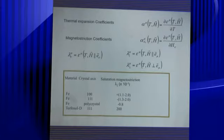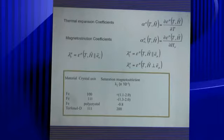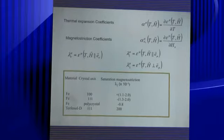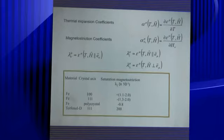Magnetostriction is analogous to thermal expansion. Thermal expansion depends on temperature, while the magnetostrictive effect depends on the applied field. The magnetostriction tensor depends on sample stress, temperature, field strength, and the direction of the field relative to the crystalline orientation. For example, in iron, the coefficient along the 1-0-0 direction is approximately 1.2 × 10⁻⁵, and along 1-1-1 it is about 2.0 × 10⁻⁵, while the polycrystal presents different effects.